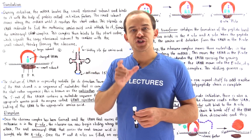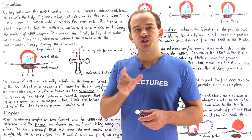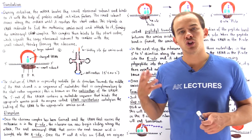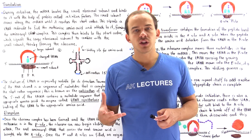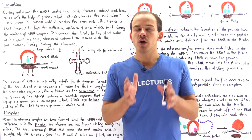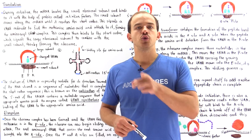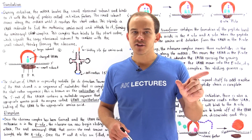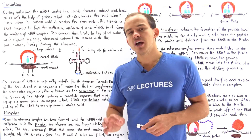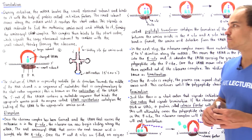Once our small subunit binds to the mRNA molecule, the small subunit then moves along the mRNA molecule until it locates a specific nucleotide sequence known as the start codon. The start codon is the nucleotide sequence AUG, where A is adenine, U is uracil, and G is guanine.